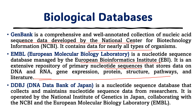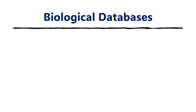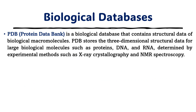Third, DDBJ, the DNA Databank of Japan, is a nucleotide sequence database that collects and maintains nucleotide sequence data from researchers. It is managed by the National Institute of Genetics in Japan, collaborating with NCBI and EMBL. Fourth, PDB (Protein Data Bank) is a primary database containing structural data of biological macromolecules, especially proteins. PDB stores three-dimensional crystallized structural information about large biomolecules such as proteins, DNA, and RNA, determined by methods like X-ray crystallography and NMR, with most data coming from X-ray crystallography.